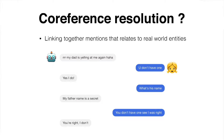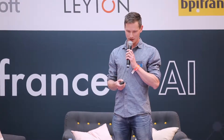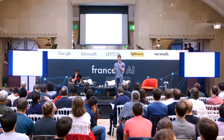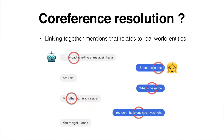'What's his name?' 'My father's name is a secret.' 'You don't have one.' 'See, I was right.' 'You're right, I don't.' So here, what's the problem for a chatbot? There is one entity — the father — that is always referred to by a different word: dad, then one, then his, then father, then one. You have to know that these all refer to the same real-world entity.